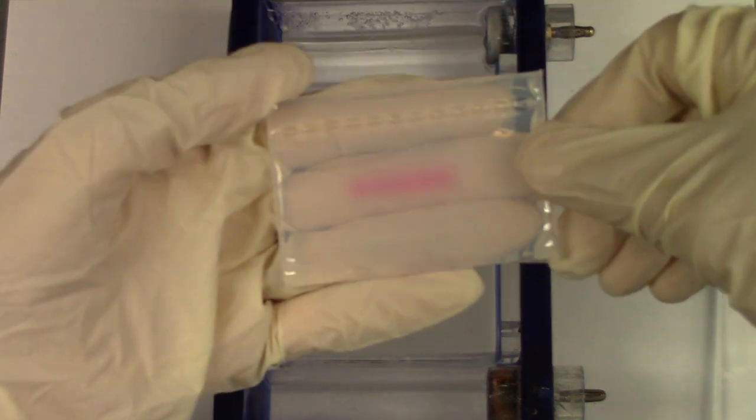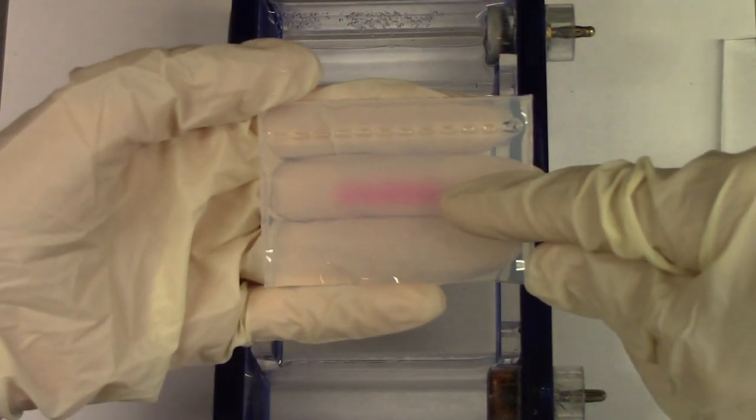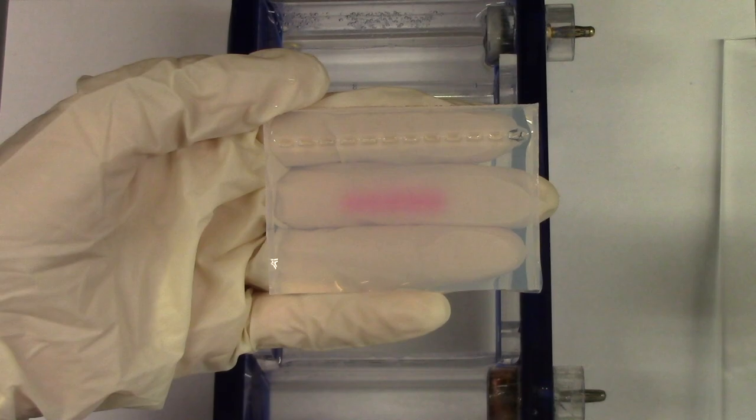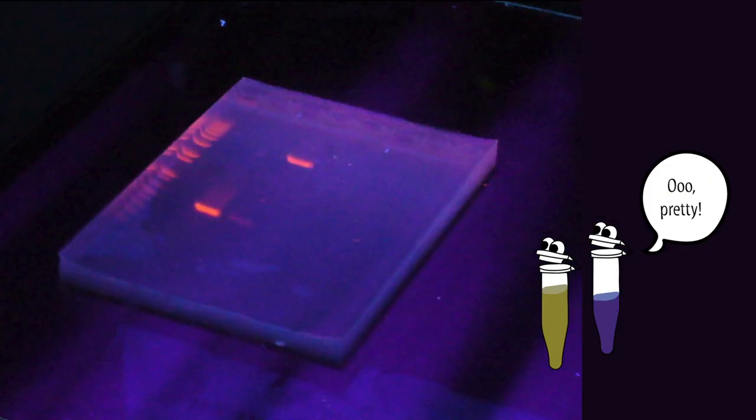After about 30 to 45 minutes of running the electrical current, we can look to see where the pieces of DNA are. Now the purple stuff there, that's the loading dye, that's not the DNA. To see the DNA, we use a stain that binds to DNA and fluoresces under UV light.